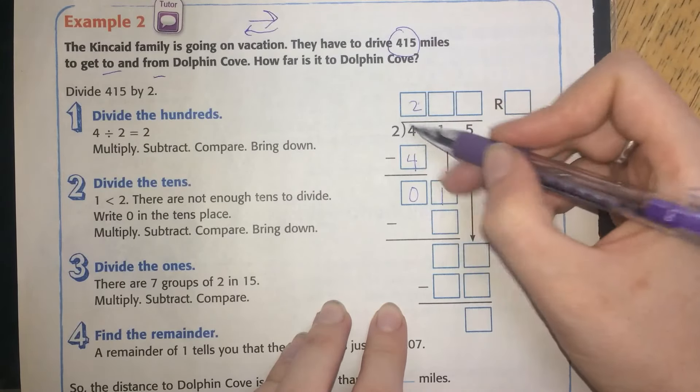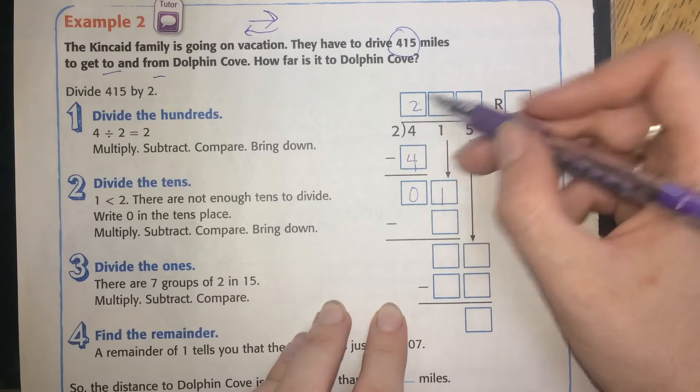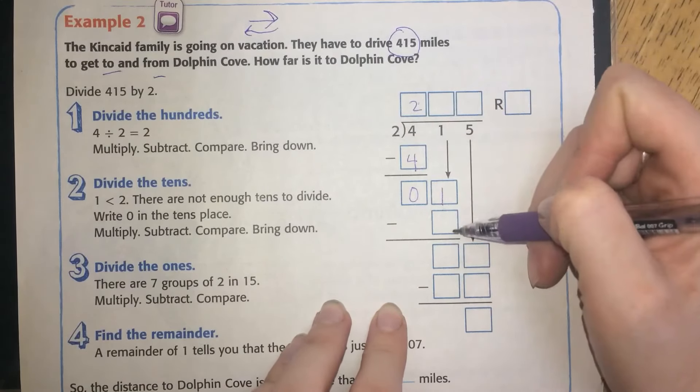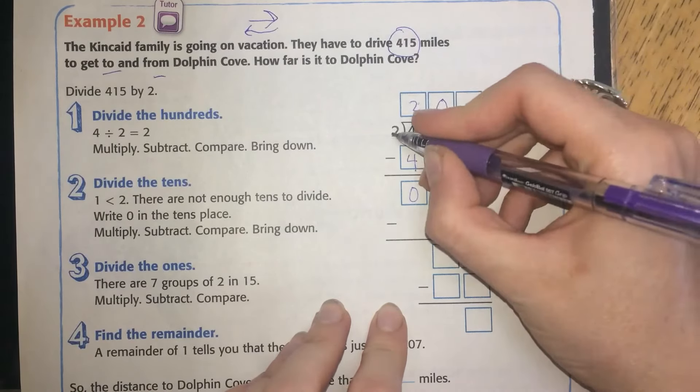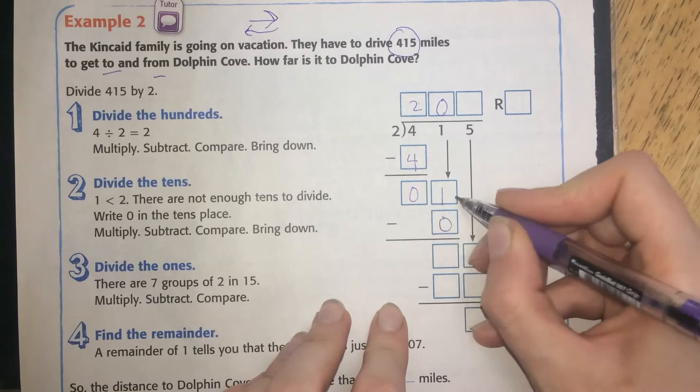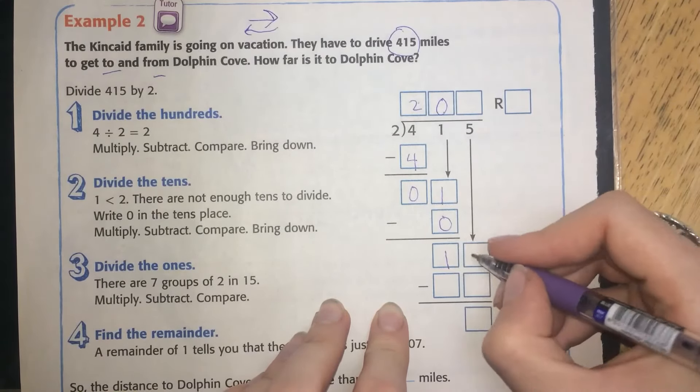1 divided by 2. Can't do it. Because if we put a 1 here, 1 times 2 would be 2, and you can't subtract 1 minus 2. So we need a 0. 0 times 2 is 0. Subtract.